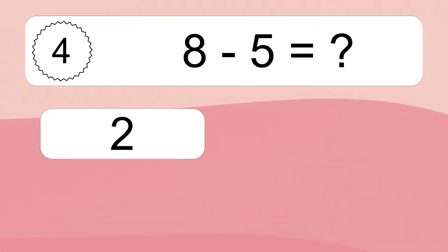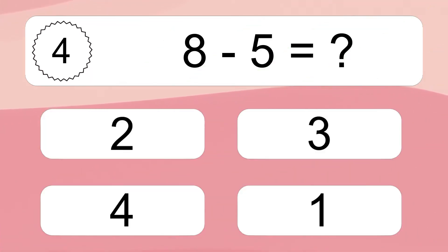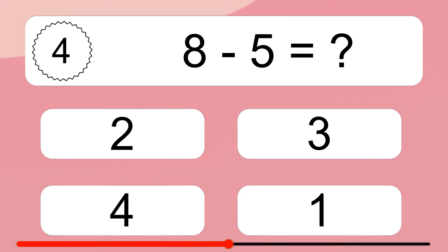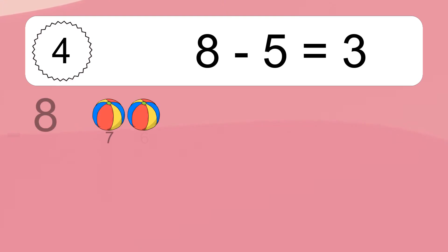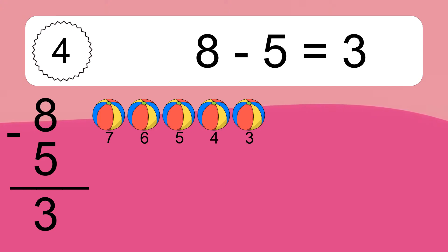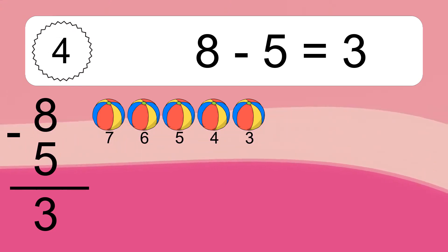8 minus 5 equals what? 8 minus 5 equals 3. Let's count it: 7, 6, 5, 4, 3.